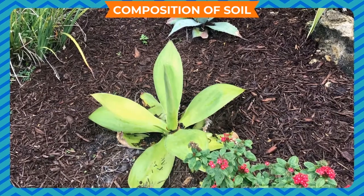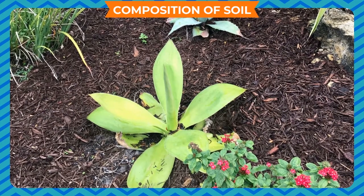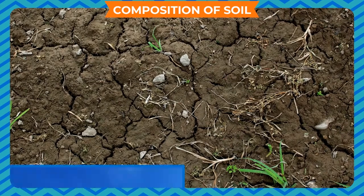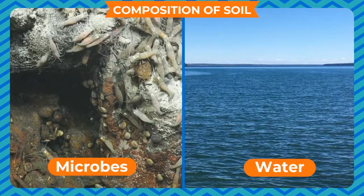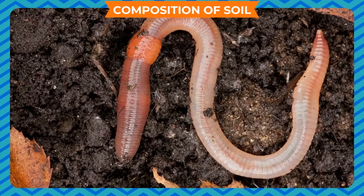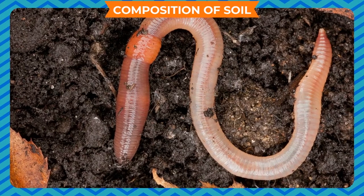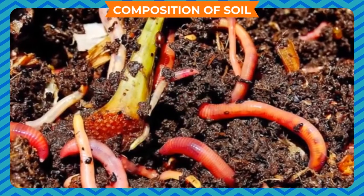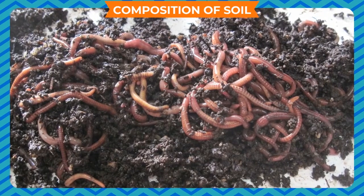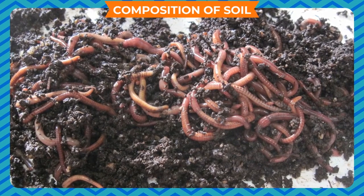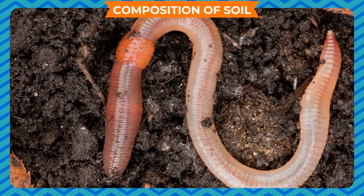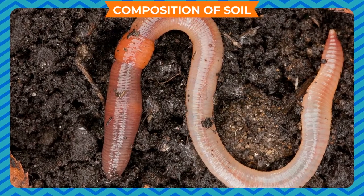Humus is the decomposed product of plants and animals. Apart from these, soil also contains air, water, microbes and many small insects. Worms and insects live in the soil and help in improving its fertility. Worms eat soil and excrete the same; the excreted soil is seen on the surface of the earth as worm casts.